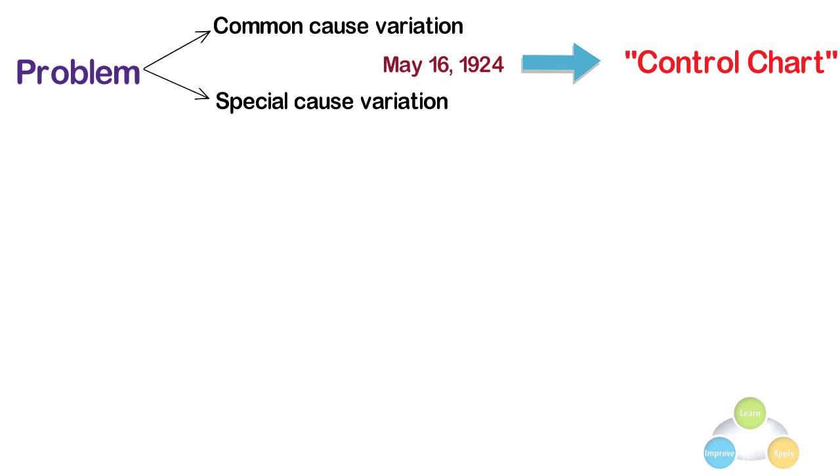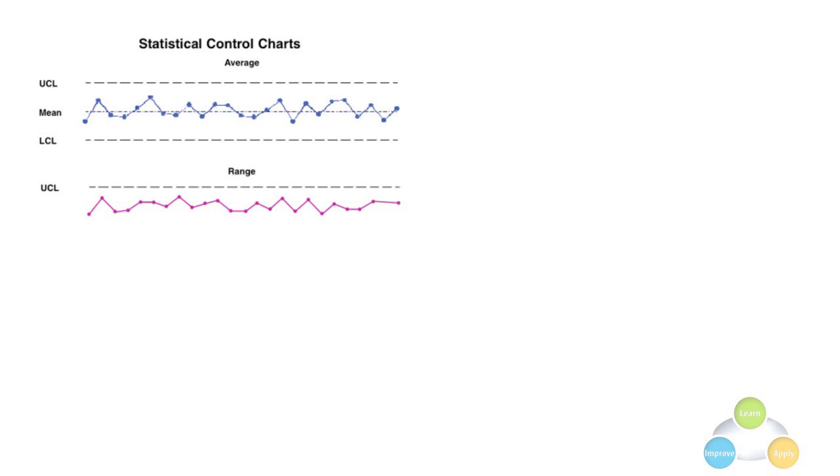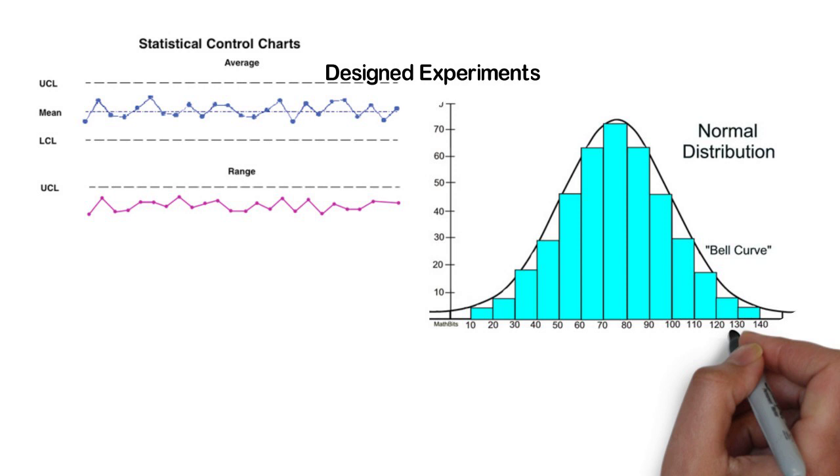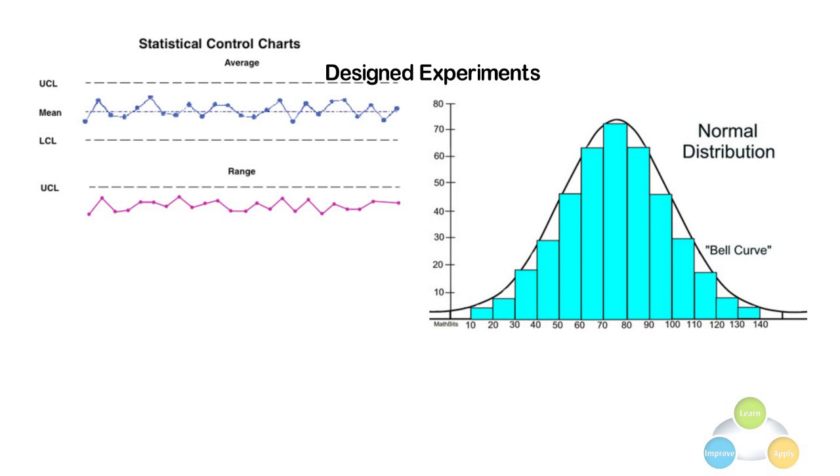Shewhart created the basis for the control chart and the concept of a state of statistical control by carefully designed experiments. While Shewhart drew on pure mathematical statistical theories, he understood that data from physical processes typically produce a normal distribution curve, also commonly referred to as a Bell curve.